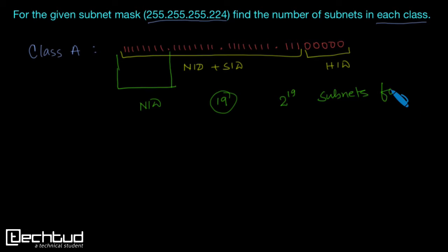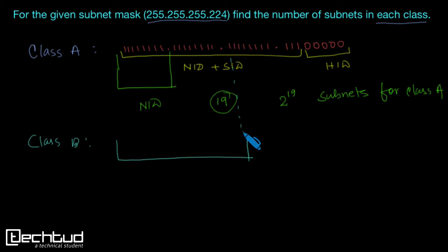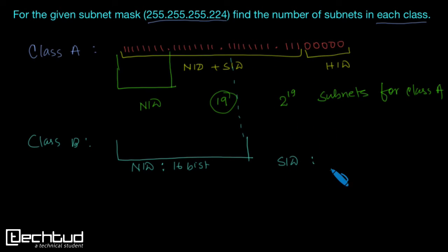That gives us 2^19 subnets for Class A. Similarly for Class B: the first two octets are for NID, so 16 bits are for network ID. The remaining SID bits are 8 and 3, giving 11 bits. So the number of subnets will be 2 to the power 11.